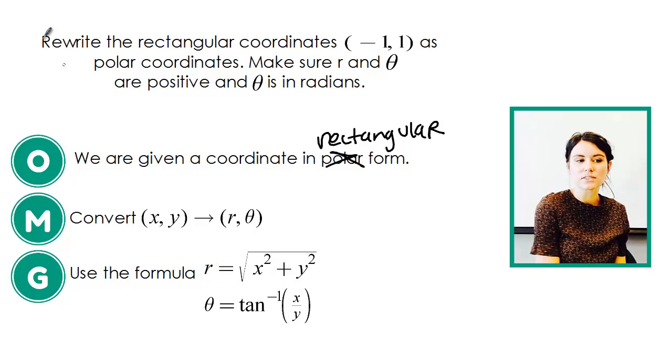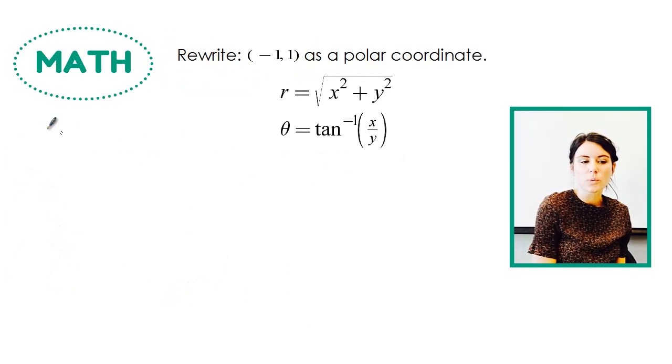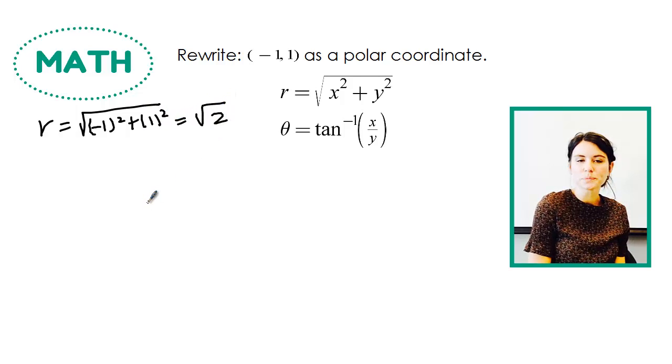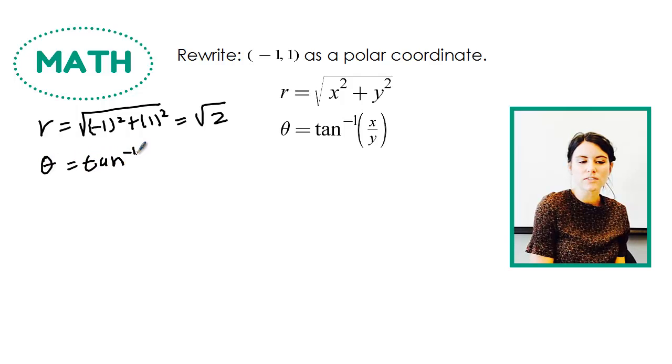So we're going to say that r is equal to the square root of (-1)² + (1)², which will be √2. And then our theta is going to be equal to the tangent inverse of, this should say y over x, of y over x.